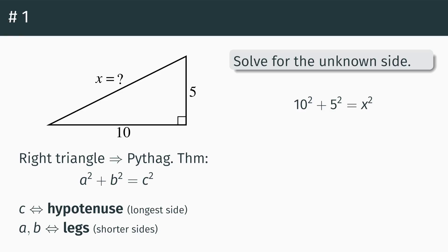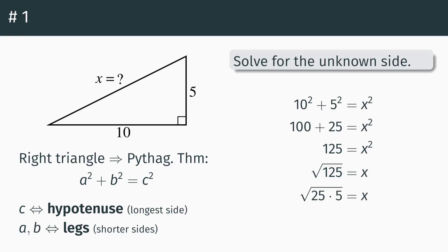From here on, it's just a matter of doing algebra. Ten squared is a hundred, five squared is twenty-five, equals x squared. A hundred plus twenty-five, add together, we get 125 equals x squared. We take the square root to get to x — root 125 equals x. We can simplify 125 as 25 times 5, so the square root of 25, well 25 is five squared, so we can pop that out, and now we've got five root five equals x. That's as simple as we can get, and we're done.